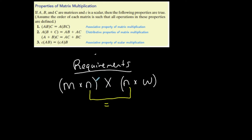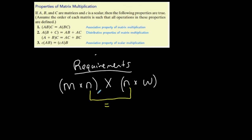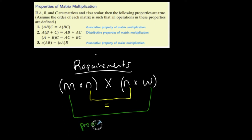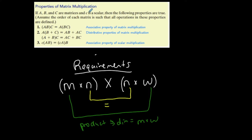The number of columns in the first matrix has to be the same as the number of rows in the second. I like to write the dimensions this way. Your final product is going to have the dimension M by W. So the two inner values have to be the same, and the two outer values are going to give you the dimension of your product when doing matrix multiplication.